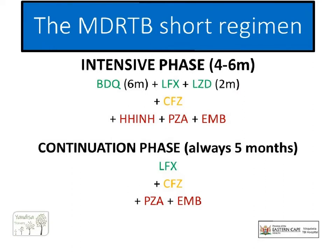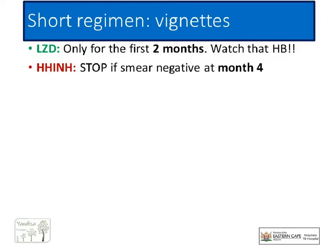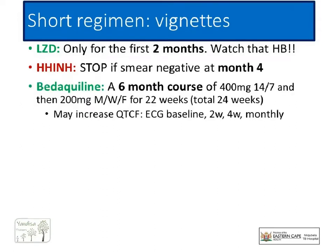Let's go through each drug in more detail and see which ones are stopped when. Linezolid is only added for the first two months — remember to watch the Hb, and if it drops, admit for transfusion. We try to keep linezolid in this regimen for that first two months at all costs. High-dose INH will be stopped at four months if the patient is smear-negative at that point. Bedaquiline is a standard six-month course: it starts at 400 mg daily for two weeks, then reduced to 200 mg on Monday, Wednesday, and Friday for a further 22 weeks. It can increase the QT interval, so the ECG must be monitored carefully.